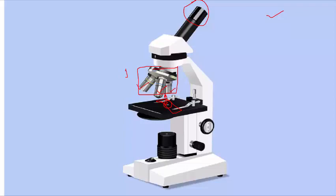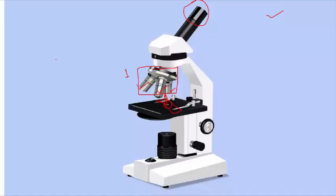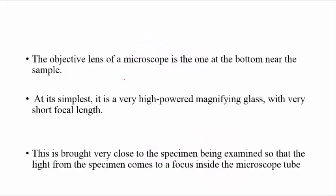The objective lens is the lens near to the specimen. It is at the bottom of the body tube, near to the sample. It is the simplest and high power magnification glass. Its focal length is very low.